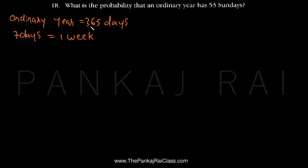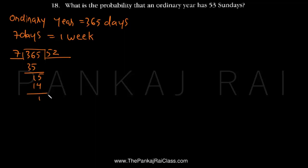So let us see how many weeks are there in 365 days. For that, let us divide 365 by 7. We know that 7 times 52 is 364, so when we divide 365 by 7 we get 52 and a remainder of 1. That means in an ordinary year there are 52 weeks and one remaining extra day.